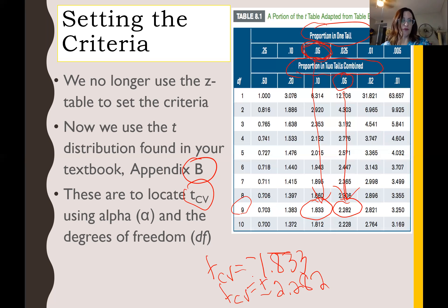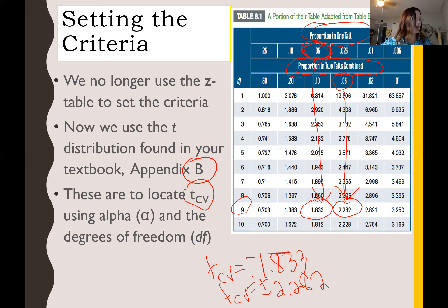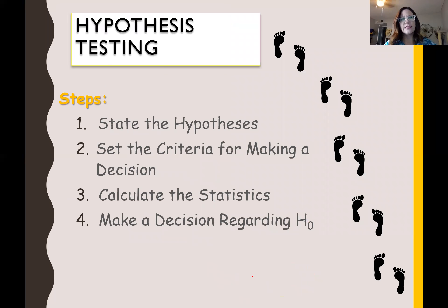It's important to learn how to use those tables. There will be times you might need to estimate — for example, the T table goes up to 28, 29, 30 degrees of freedom, then jumps to 40, 60, 120. Just use whatever is closest. If your degrees of freedom is 58, just use 60. With hypothesis testing and a T test, it's really the same steps — it just differs a little within those steps.